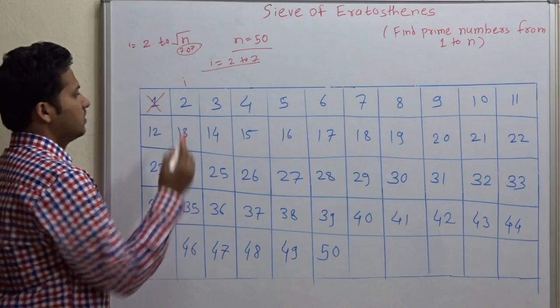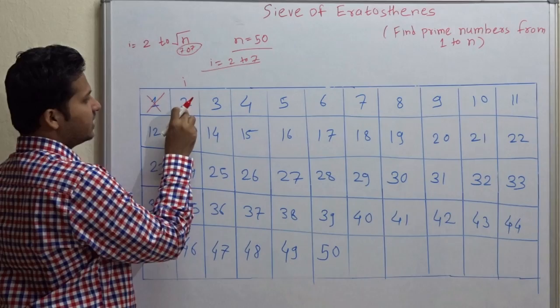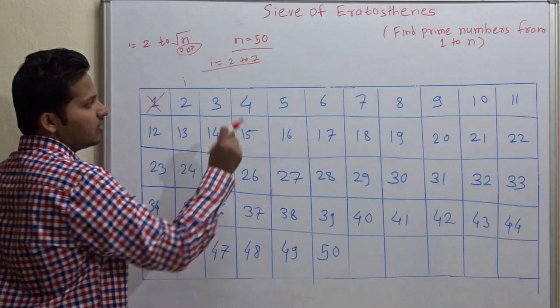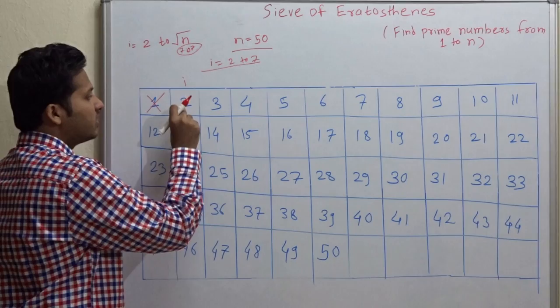Now, let us see. First i is equal to 2. If the number is not cancelled, then this is a prime number. And then go on cancelling all the multiples of that prime number.